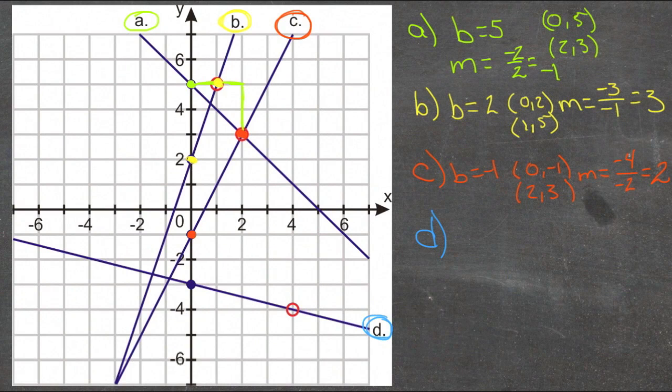And then finally line d. We have our y-intercept down here at negative 3. So b is negative 3. And we have a point here at (4,-4). Point at (4,-4).